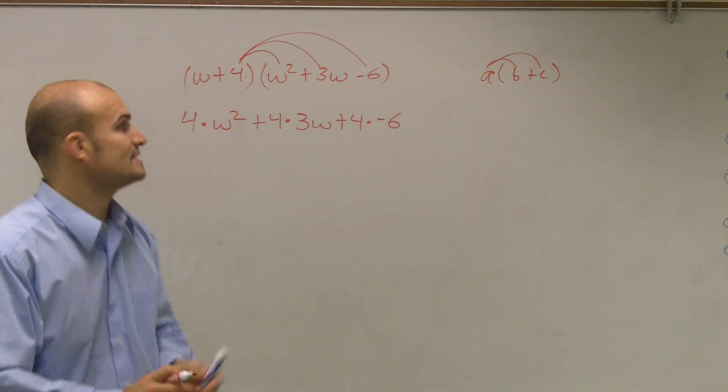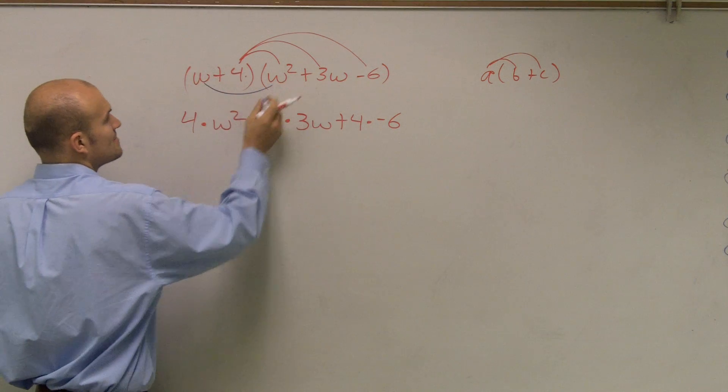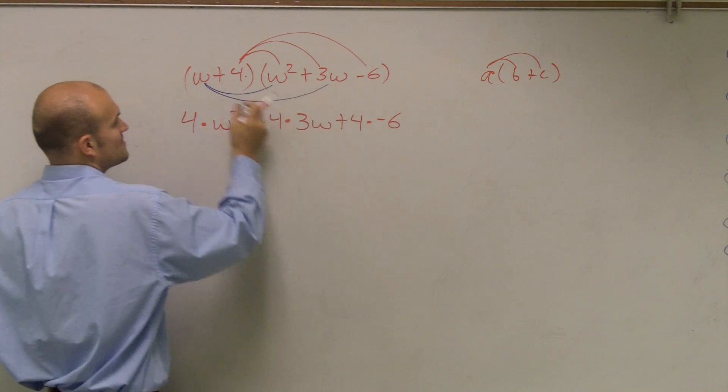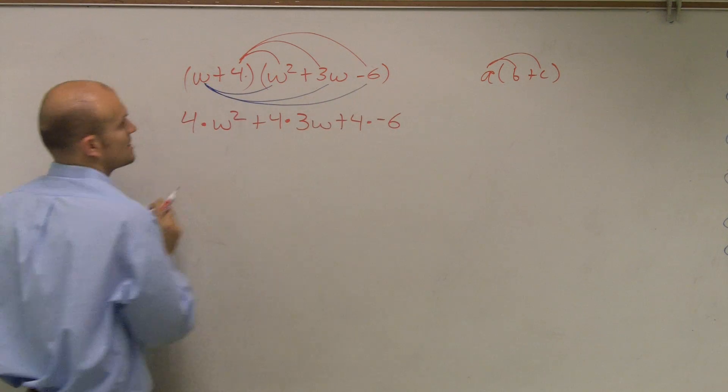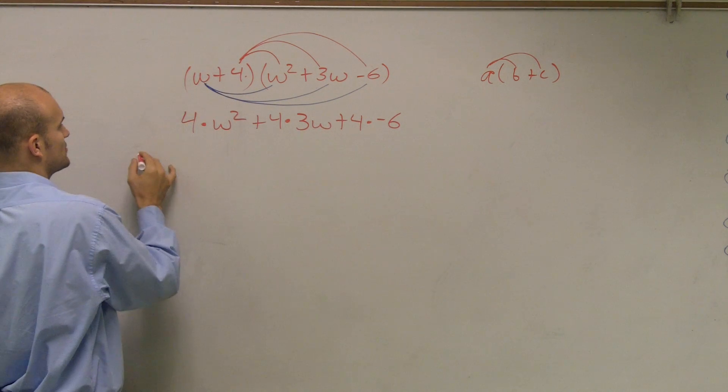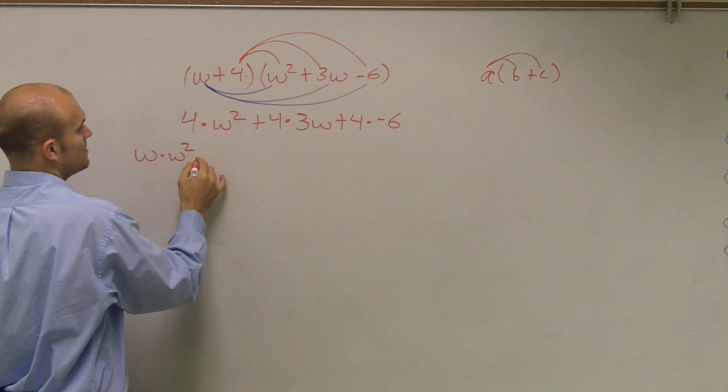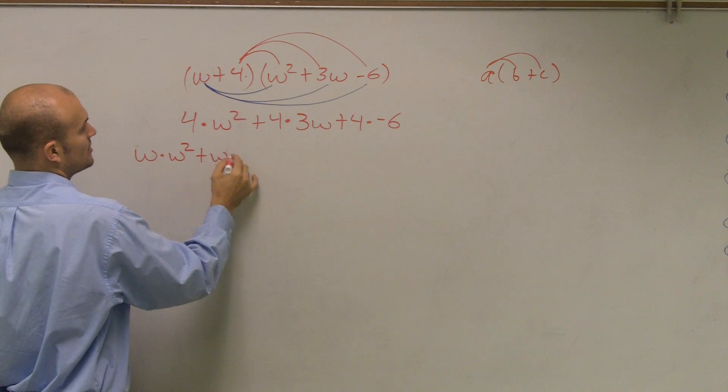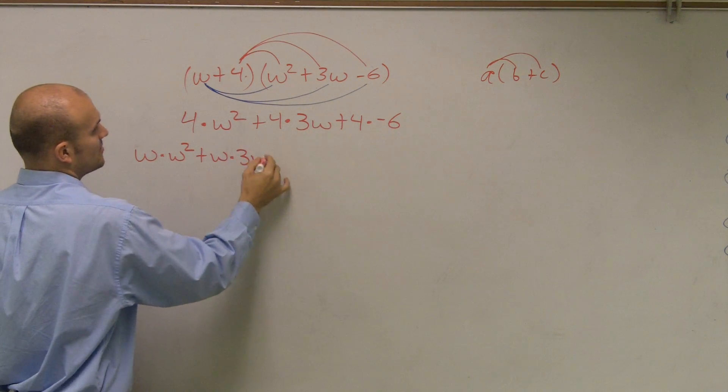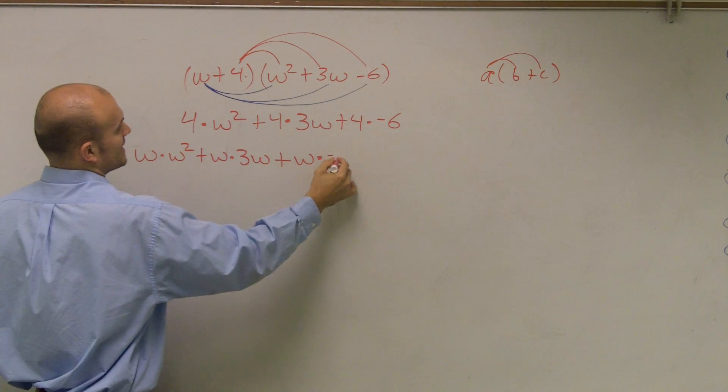Then, we have to do the exact same thing with our w. So I multiply w times w squared, w times 3w, and then w times the negative 6. So when I do that, w times w squared gives me w times w squared, plus w times 3w, plus w times a negative 6.